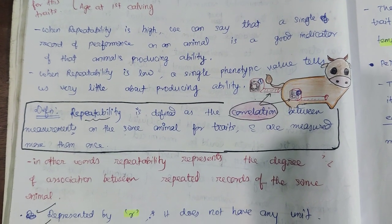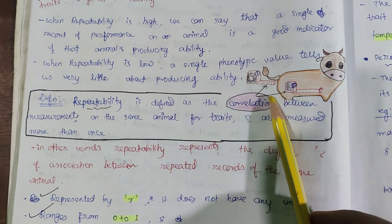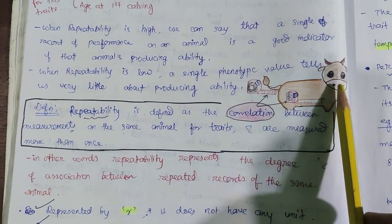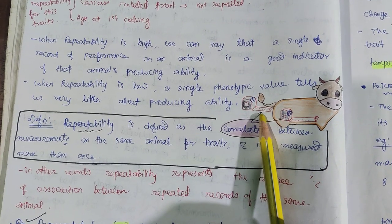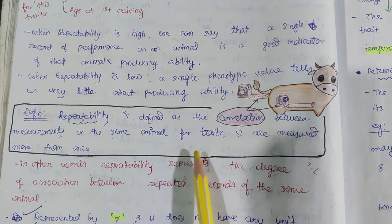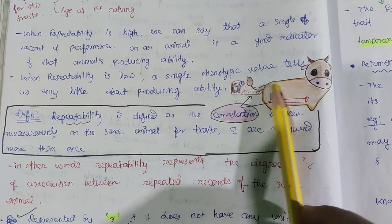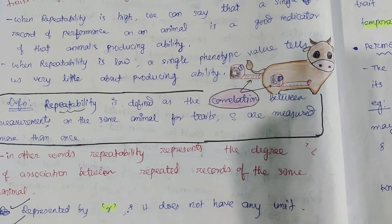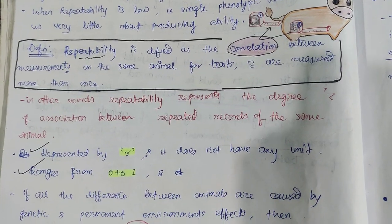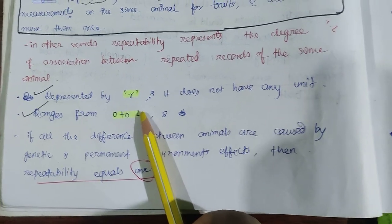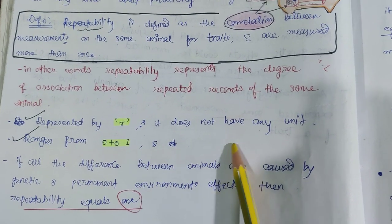Repeatability is defined as the correlation between measurements on the same animal for traits which are measured more than once. Try to remember the keyword 'correlation' here. Two measurements are taken on the same animal. It is represented by 'r', has no unit, and ranges from 0 to 1.